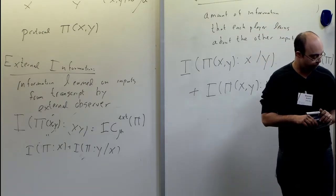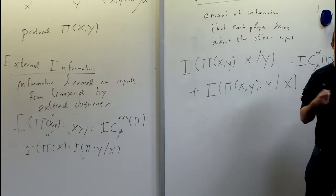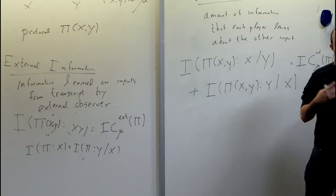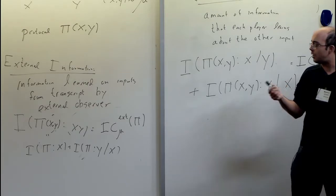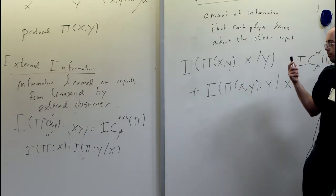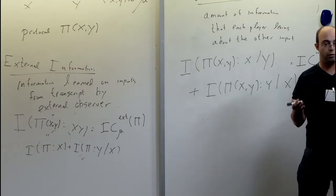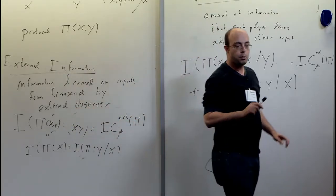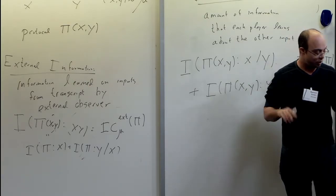Regarding randomness: it could be shared or private. For simplicity, we assume only private randomness — no public randomness. We already know we can simulate public randomness with private randomness with a log overhead. If you want to formally include public randomness, you condition the information on the public randomness. But let's ignore that small technical detail and just use private randomness.